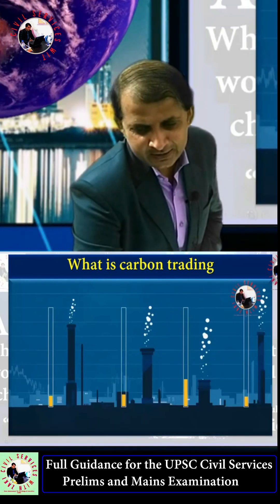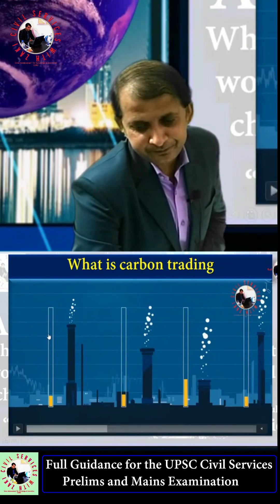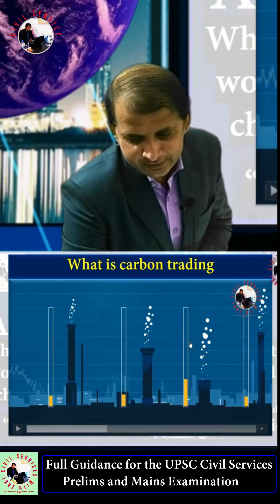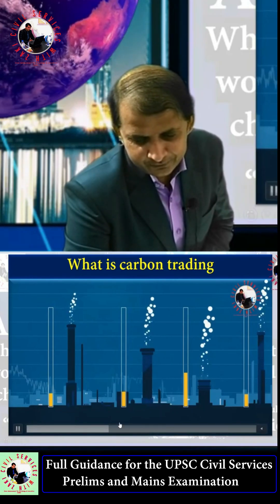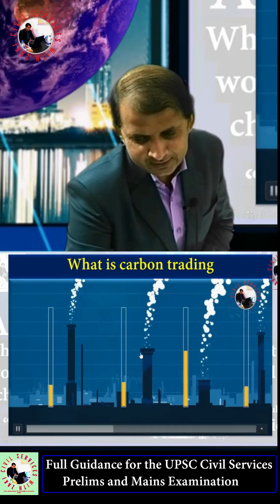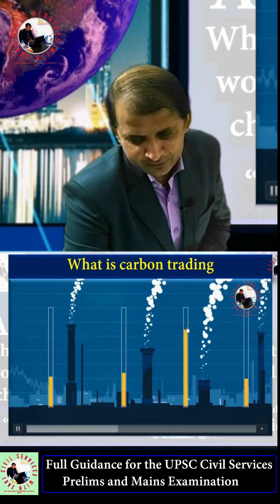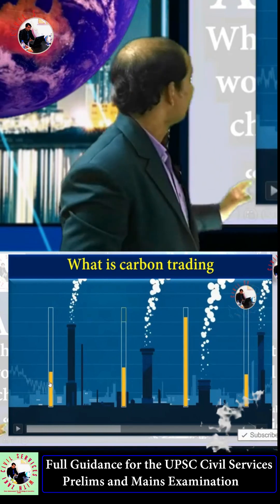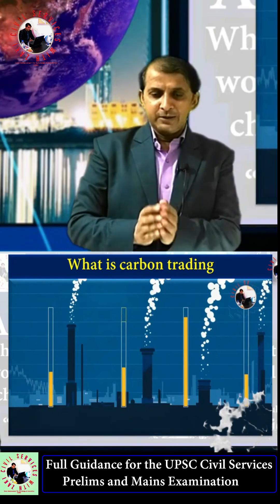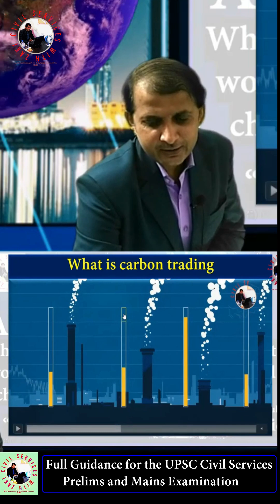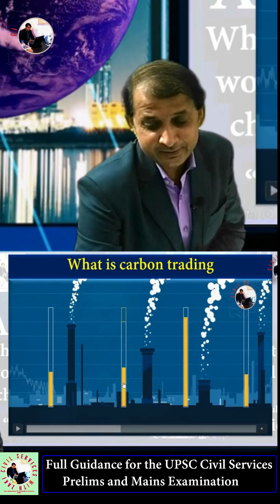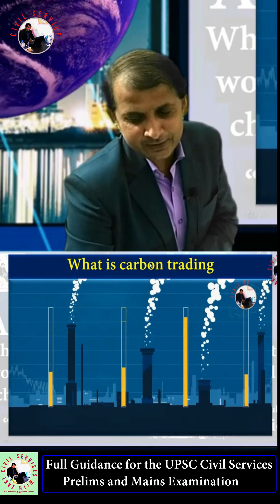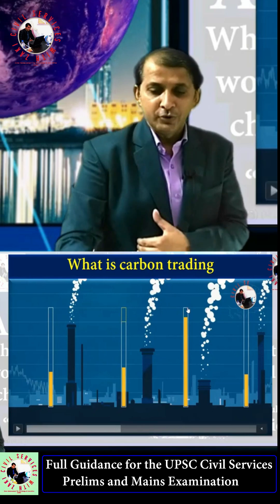Imagine four factories with an emissions cap set here. Some factories need to emit more carbon than their cap allows. The yellow figures here represent carbon emissions. If a company emits less than its cap, and another company needs more, the company with surplus allowances can trade them.